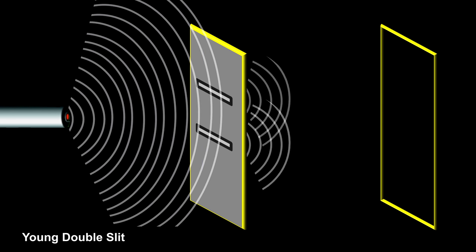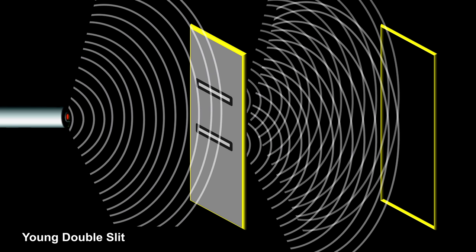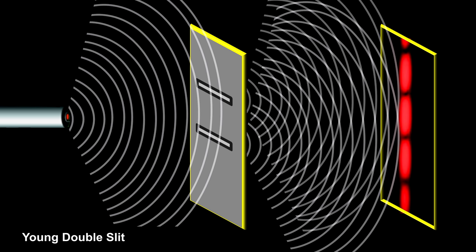Here we see light traveling through two slits and then interfering with itself on the other side. An interference pattern is etched onto the back screen. This is the famous double slit experiment.